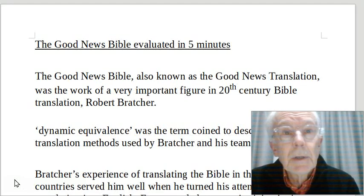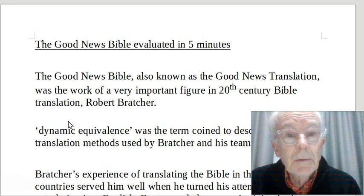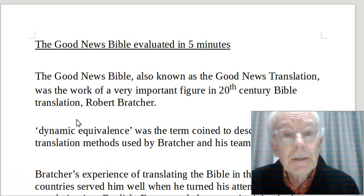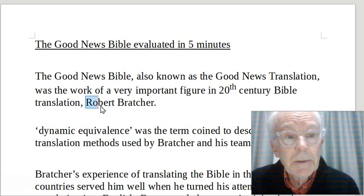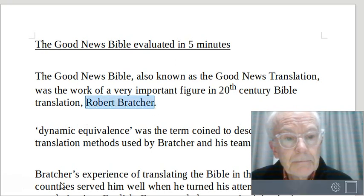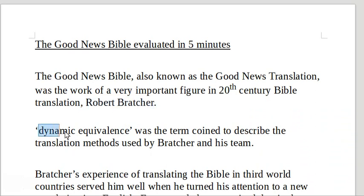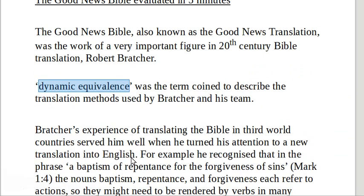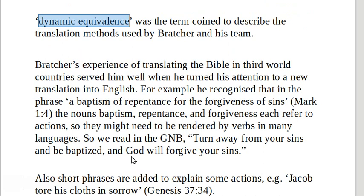The Good News Bible, also known as the Good News Translation, was the work of a very important figure in 20th century Bible translation: Robert Bratcher. Dynamic equivalence was the term coined, I think by Bratcher himself, to describe the translation methods he used. His experience of translating the Bible in third world countries served him well when he turned his attention to a new translation in English.